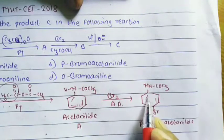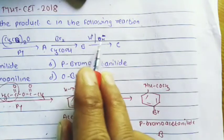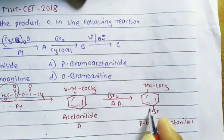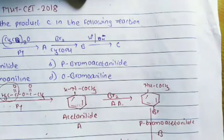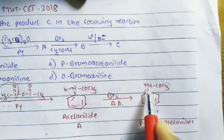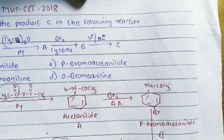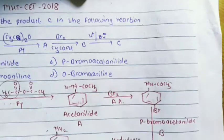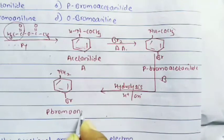Product B on hydrolysis in presence of either H⁺ or OH⁻ gives product C. During hydrolysis, the COCH3 group is removed from the nitrogen atom, and the NH2 group is regenerated. After hydrolysis of para-bromoacetanilide, we get the NH2 group restored with bromine remaining at the para position.